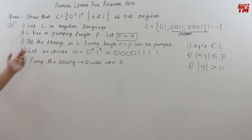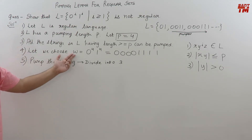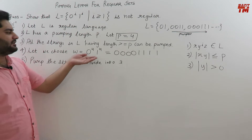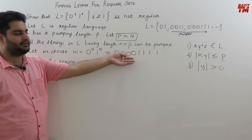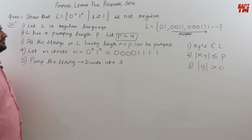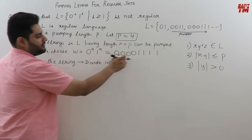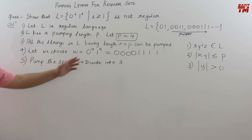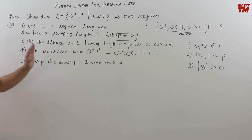Fourth point: let us choose a string W such that it has a length greater than or equal to the pumping length, because only strings with length greater than or equal to the pumping length can be pumped. So we have chosen a string of length 8. 8 is greater than 4, so this string can be easily pumped. The string is 0^4, 1^4 — four zeros followed by four ones. So we have chosen the string.